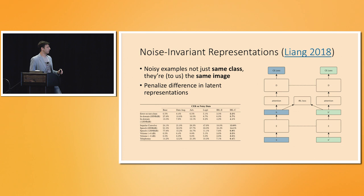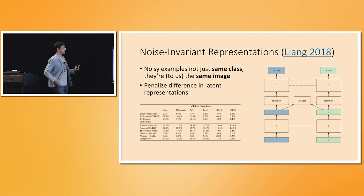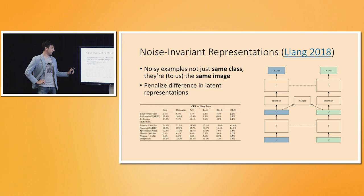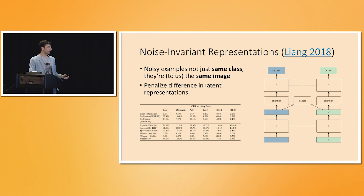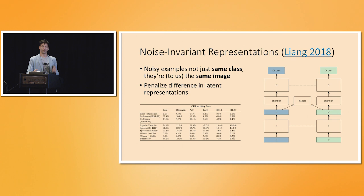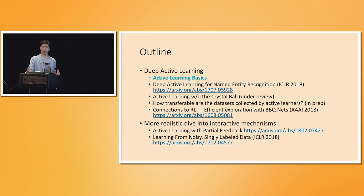We have recent papers on arXiv specifically for data augmentation that showed nice performance dealing with additive noise in speech, even in settings we haven't encountered before. The key is that when doing data augmentation, we don't just require augmented examples to get the same label — we also penalize differences in hidden representations. There's a lot to talk about there, but now I want to dive into active learning.